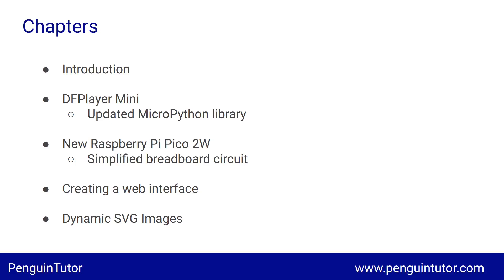First I'll give a quick introduction to the DF Robot DF Player Mini in case you haven't seen my previous video. Then an update on the changes I've made to the MicroPython library, and an introduction to the new Raspberry Pi Pico 2W. I've also simplified the circuit diagram. Then an explanation about the web server running on the Pico 2W and how I created some code to generate dynamic SVG images as part of the web interface.